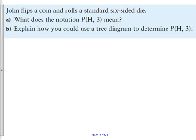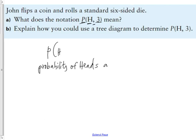Question number one says: John flips a coin and rolls a six-sided die. What does the notation P(H,3) mean? Well, P stands for probability. In the brackets, the first term is your first event — in this case, flipping the coin — and it means the probability of heads. The comma separates the second event, which is three. So it means the probability of flipping a head and rolling a three.